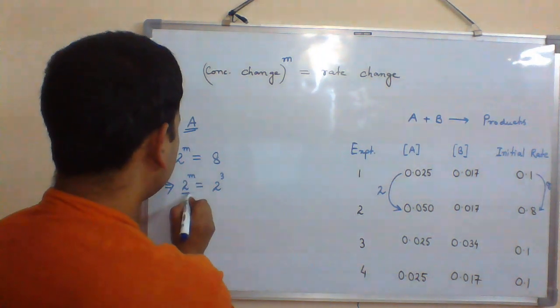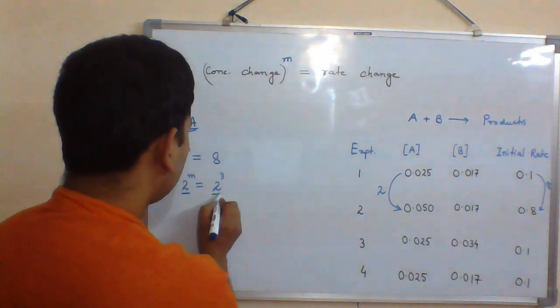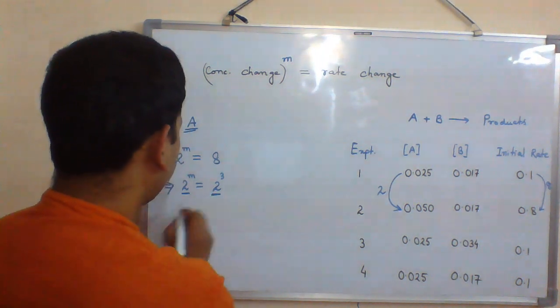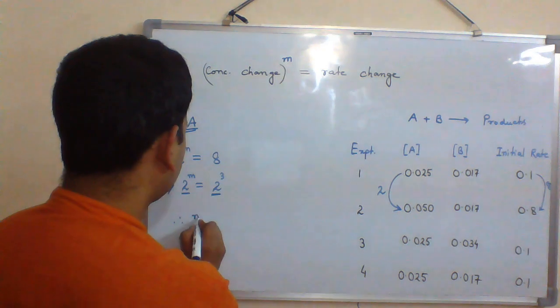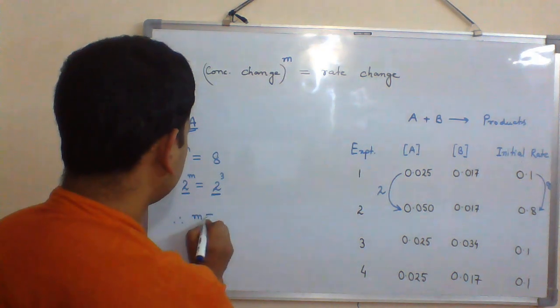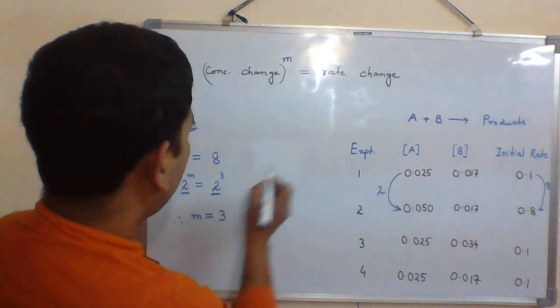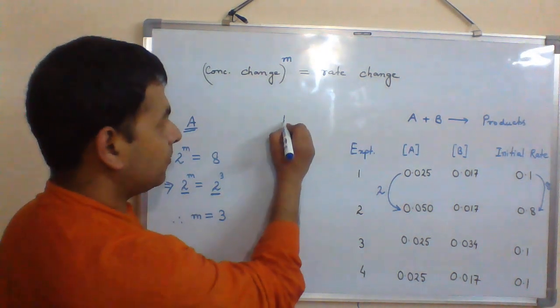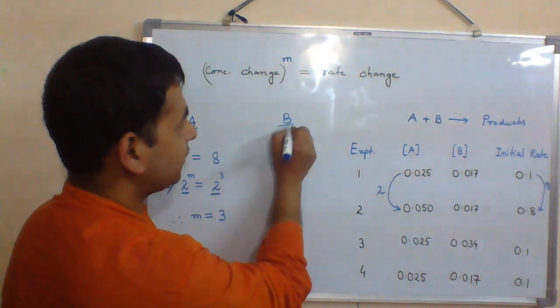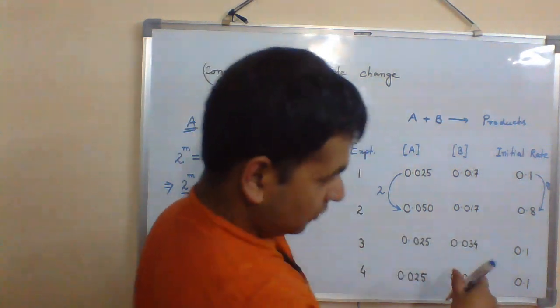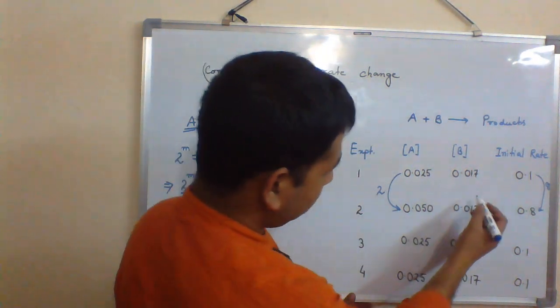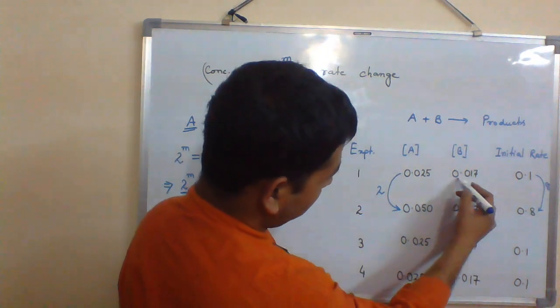We can write 8 as 2 power 3 and 2 power M. Since these two are the same, therefore M can be written as 3.